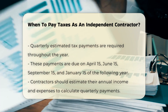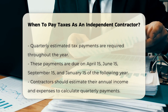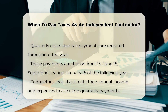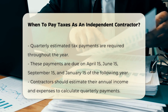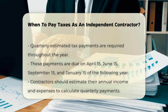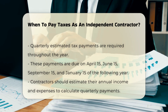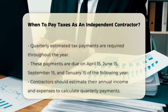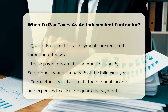Calculating Quarterly Payments. To calculate these payments, independent contractors need to estimate their annual income and expenses. They can use the previous year's tax return as a guide or estimate based on current income. Each quarter, they should pay approximately one-fourth of their estimated annual tax liability.